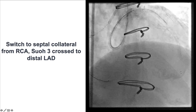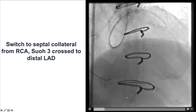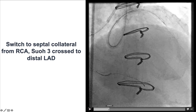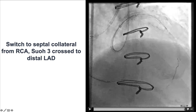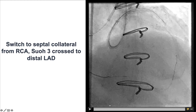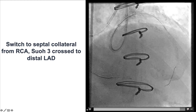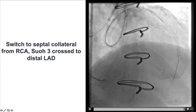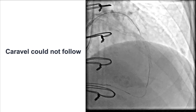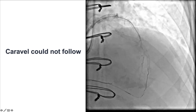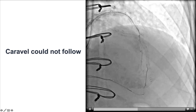We then went to the right coronary artery and used a SUO-03 guide wire, which was able to cross all the way into the LAD, partially within the previously occluded in-stent segment. The SUO-03 has become the guide wire of choice for crossing both septal and epicardial collaterals. Unfortunately, the Caravelle microcatheter could not follow the SUO-03 guide wire.